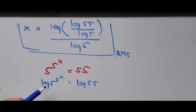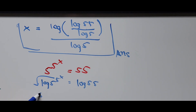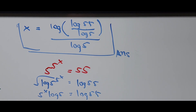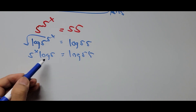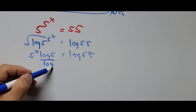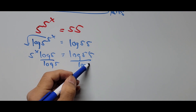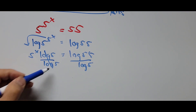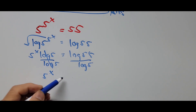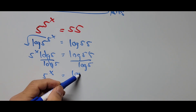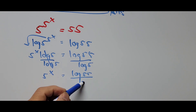Bringing down the exponent as a coefficient, we get 5^x times log 5 equals log 55. To isolate 5^x, we divide both sides by log 5, giving us 5^x equals log 55 divided by log 5.